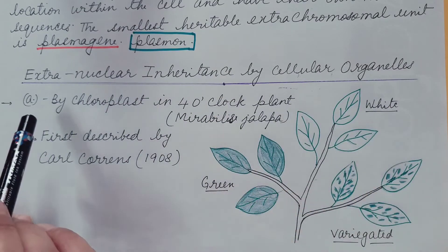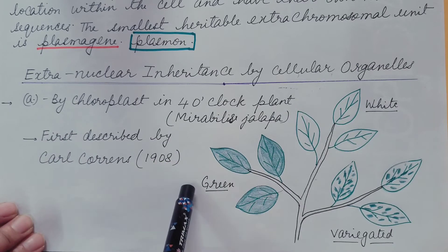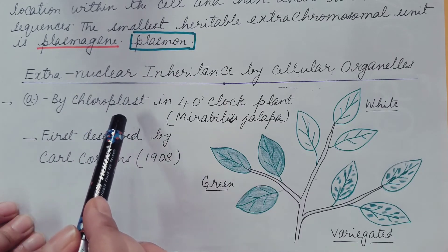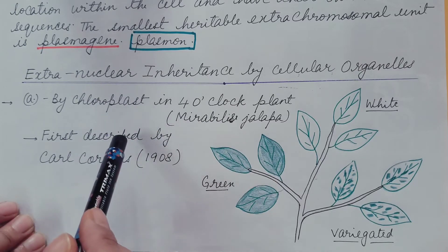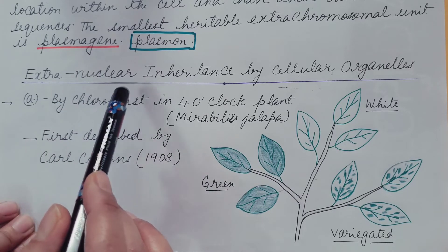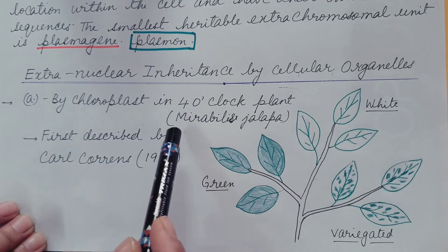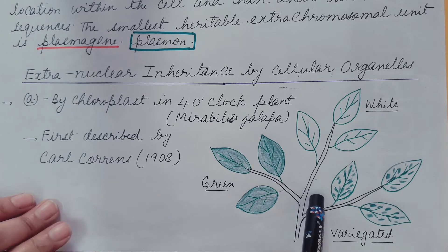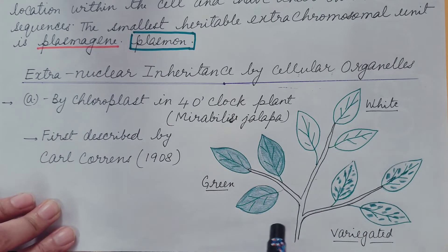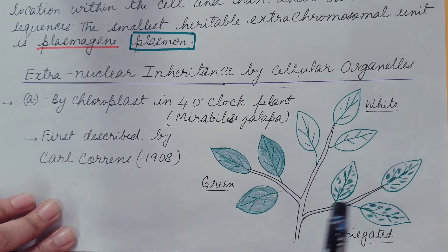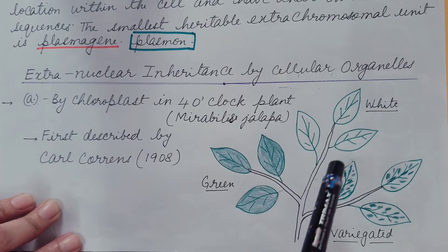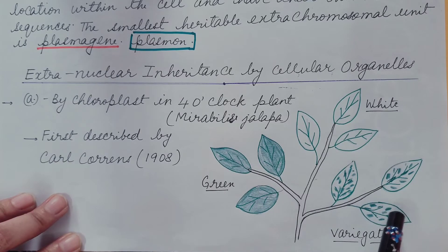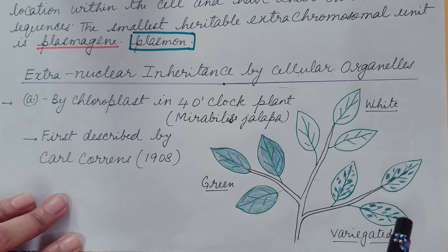Extranuclear inheritance by cellular organelles was first described by Karl Correns in 1908, and this inheritance was by chloroplast, as DNA molecules are present in chloroplasts located in the cytoplasm. He did an experiment on the four o'clock plant, scientific name Mirabilis jalapa, studying the variegated variety. In this plant, different branches bear different types of leaves: some branches have only green leaves, some have white leaves, and some have variegated leaves showing both green and white patches.